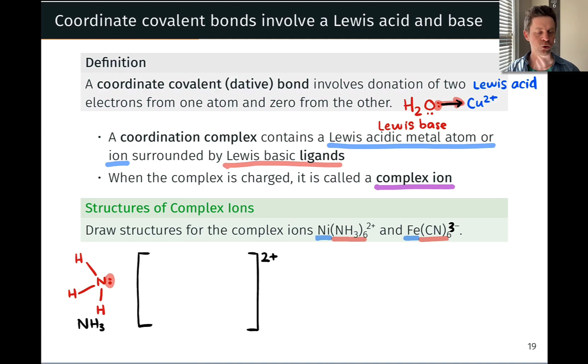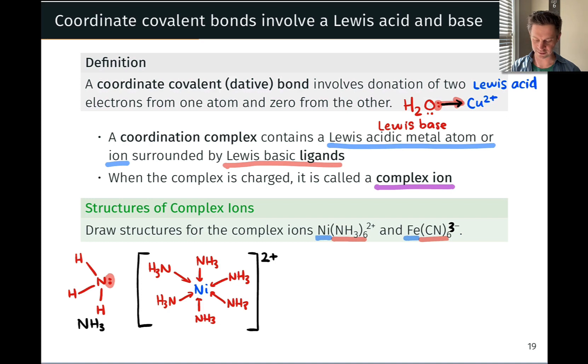The overall charge is 2+. So we're going to enclose that entire complex in square brackets and indicate 2+, to show the overall charge of the complex. The metal ion or atom always goes in the center. And here, this is a nickel 2+ cation at the center.